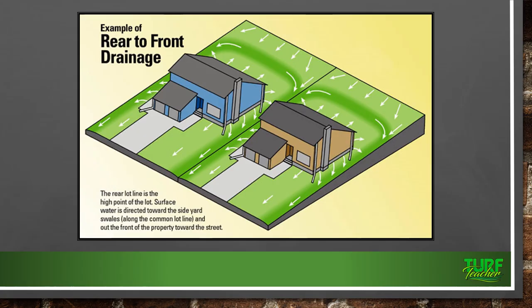Here's an example of rear-to-front drainage. As you can see with all the white arrows, the water is being directed away from the structure into the swales — that swale being a darker line. What they're doing is bringing all of the water to the front, called rear-to-front drainage, to get that water into the curb and gutter and then downstream into stormwater basins. Good way to do it.